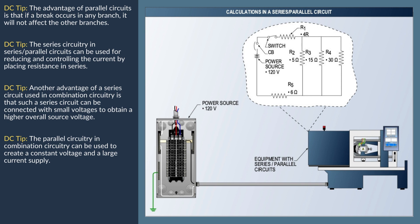I4 (fourth amperage) equals ETP (total voltage) divided by R4 (fourth resistance). ETP equals 29.9 volts divided by 30 ohms, which equals 0.99 amps.